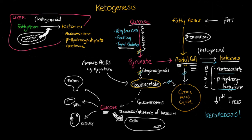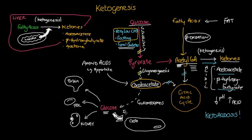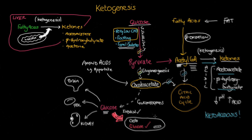Individuals who have normal insulin function during times of carbohydrate deprivation — for example, fasting or extreme low-carbohydrate diets — are spared from these devastating set of events. These individuals can still produce insulin to help facilitate the movement of new glucose produced by gluconeogenesis back into cells. This in turn slows down the entry of acetyl-CoA into ketogenesis by diverting it back into the citric acid cycle, reducing ketoacidosis.